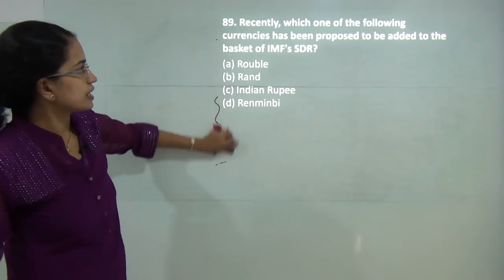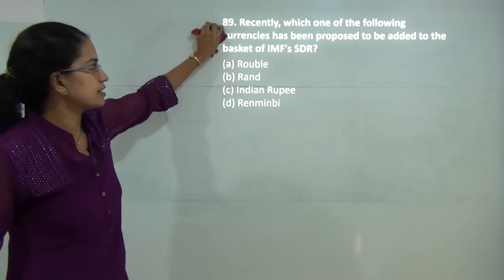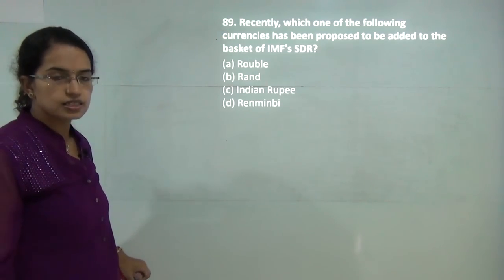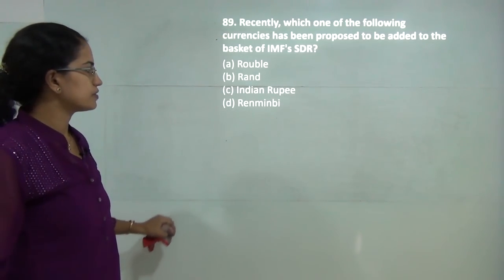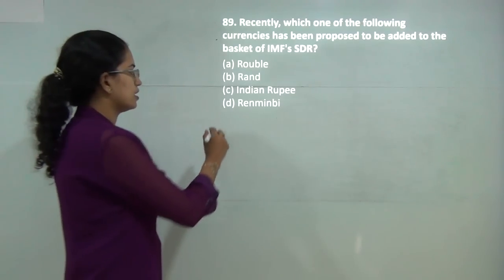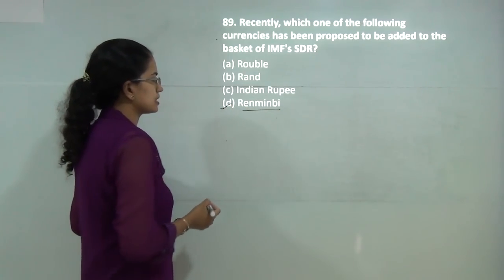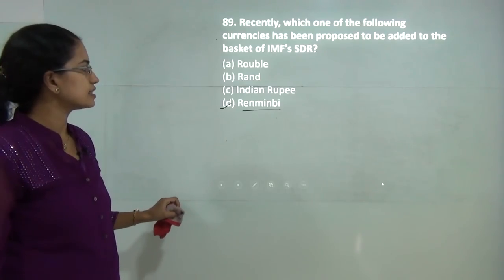Which of the following currencies have been proposed to be added to the basket of IMF Special Drawing Rights (SDRs)? Special drawing rights have been given to the Renminbi, that is the Chinese currency. So D is the correct answer here.